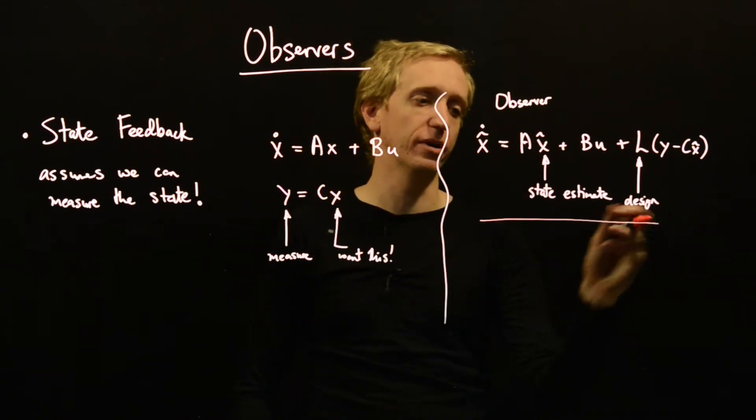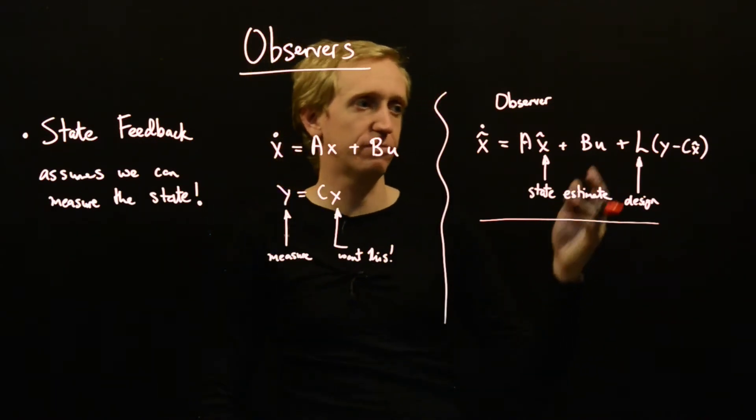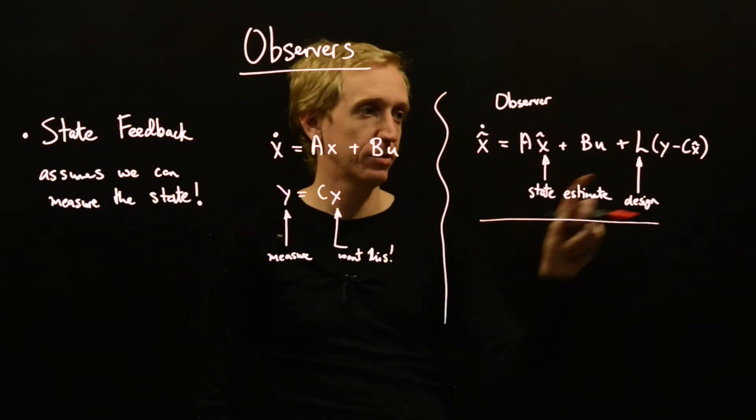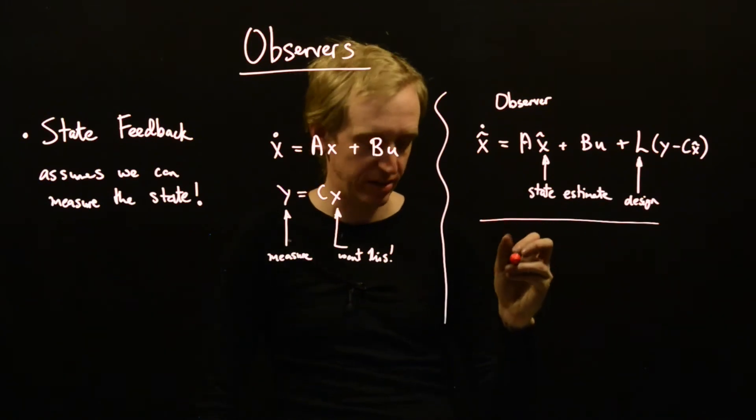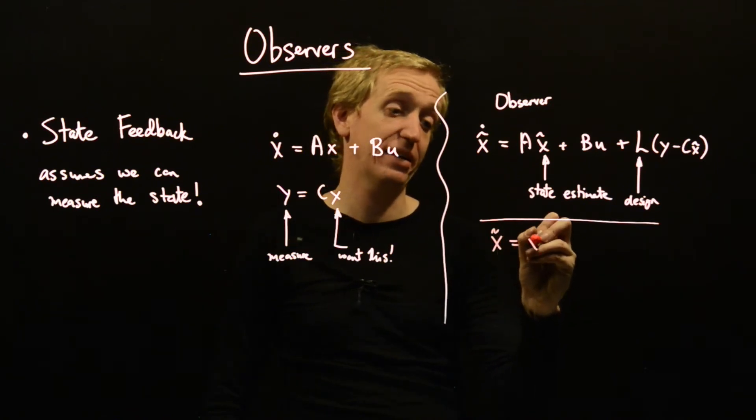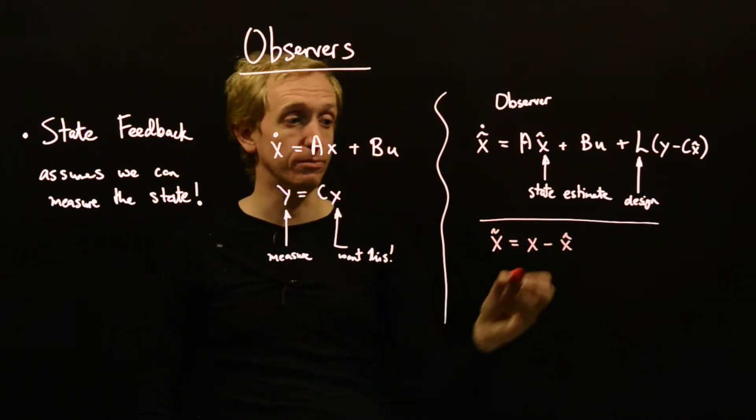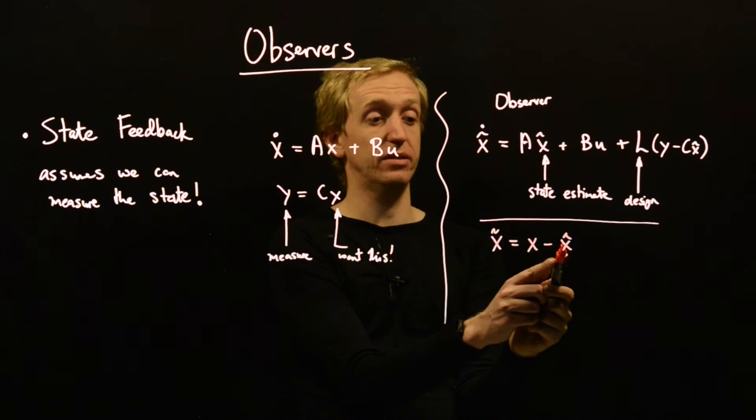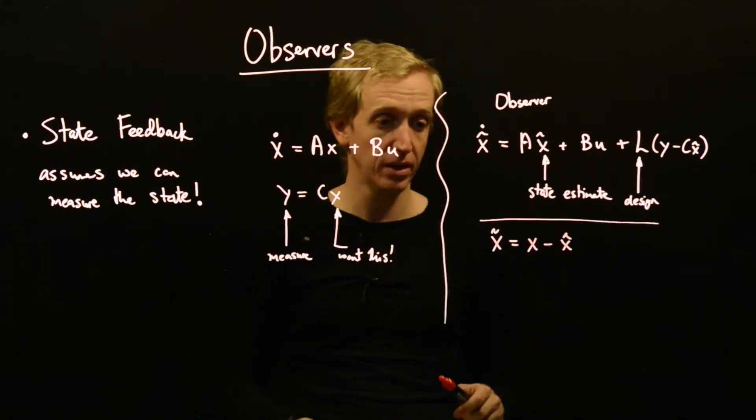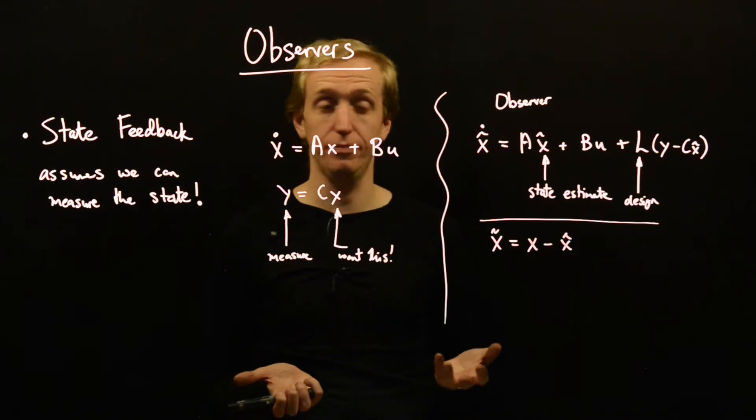We hope for something a bit stronger. What we're hoping for is, we would love this to go to zero. But even better, we would really like the difference, x tilde equals x minus x hat, we would really like this to go to zero. Because then that would mean the true state would become equal to our estimate of the state, and we would be good to go.